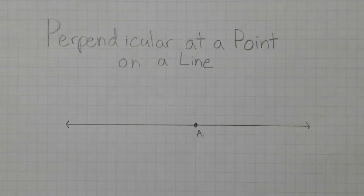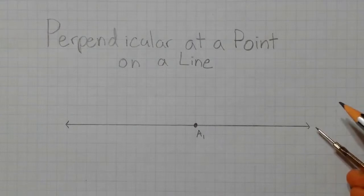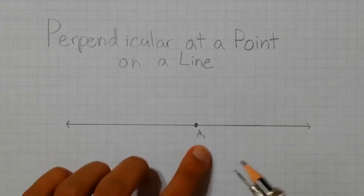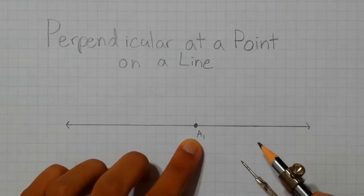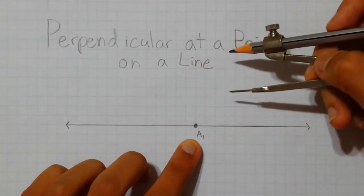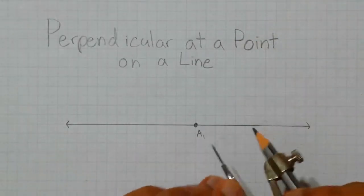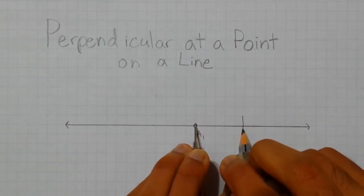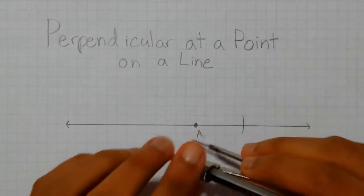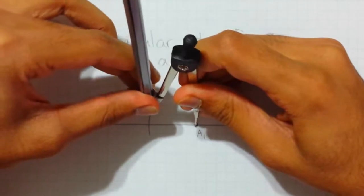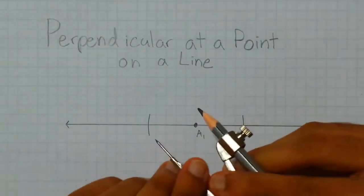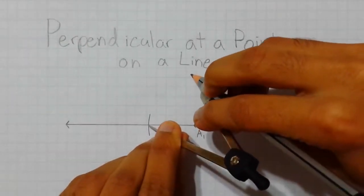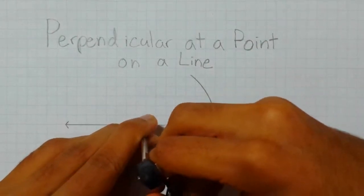The next construction is pretty similar to the last one, with a few minor adjustments. This one is the perpendicular at a point on a line. So we have our line with the point A1. This may not necessarily be the midpoint of the line segment; however, we can still draw a perpendicular through this point. To do so, we will put the tip of the compass on point A1 and draw an arc on either side of A through the line segment of equal length. Then we will place the tip of the compass on this intersection and draw two large arcs as we did with the previous construction, the perpendicular bisector.